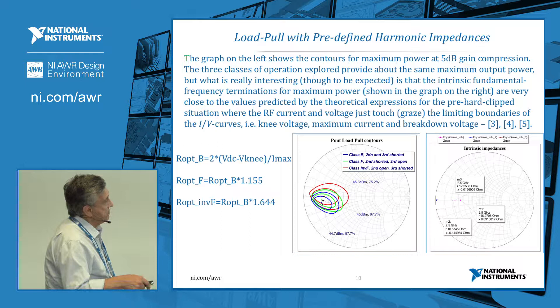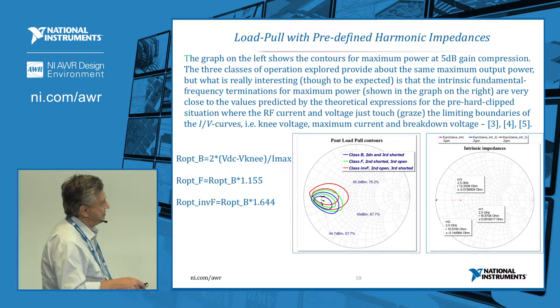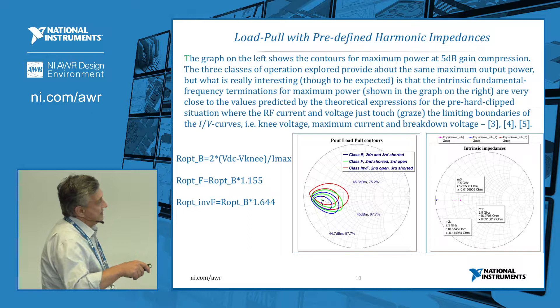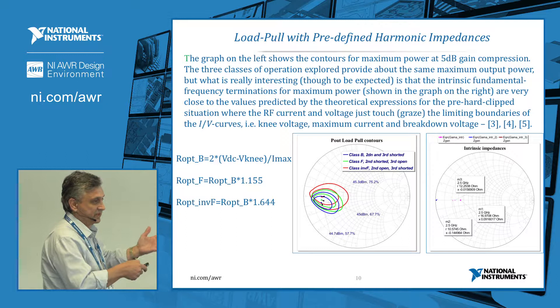There are publications on continuous modes with equations showing that for Class B the optimum maximum power is a baseline, for Class F it must be multiplied by a specific factor, and for Inverse Class F by another factor. The load pull results came nearly on top of those predicted values. The mathematics applies to pre-clipped situations, not deep compression, yet it still works even at 5 dB compression.